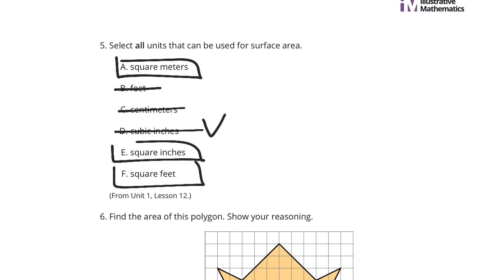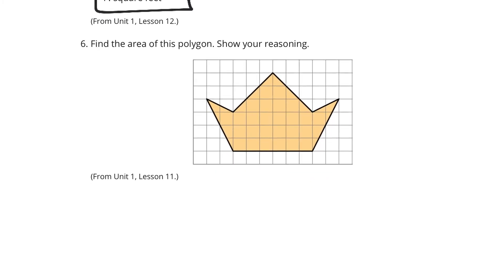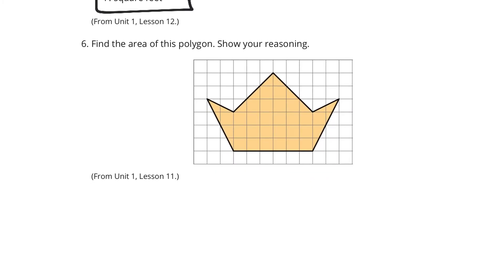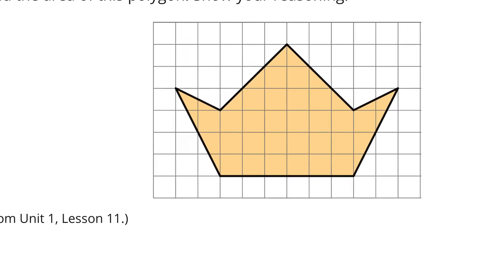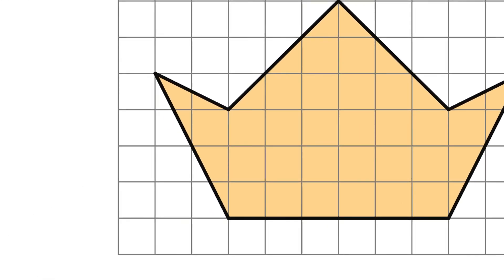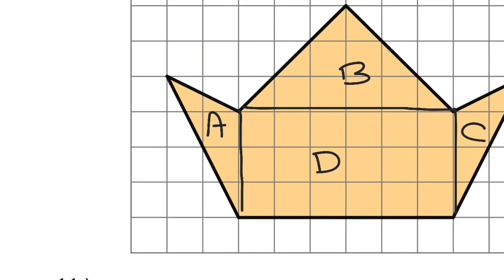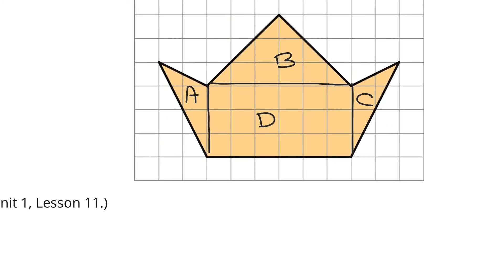And question six, find the area of this polygon and show your reasoning. Well, we're going to need to divide this into different shapes. I see three triangles and a rectangle in our near future. So, if I draw a line down here, draw a line across here, draw another line down, I have triangle A, triangle B, triangle C, and rectangle D. And this is what we need to find the area of.